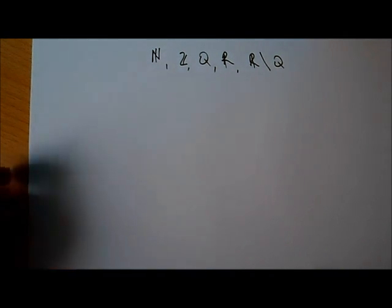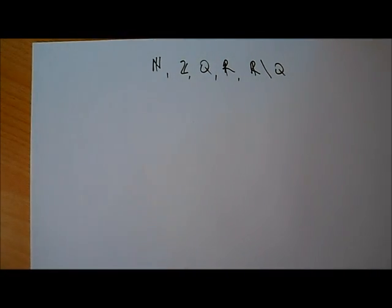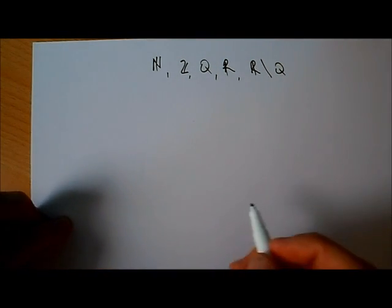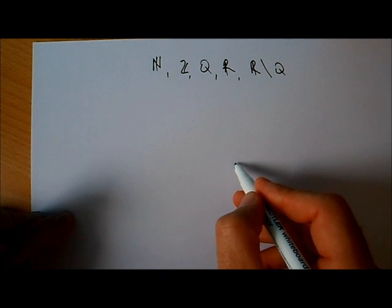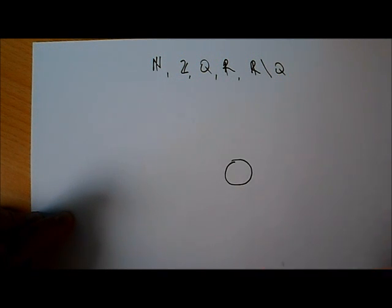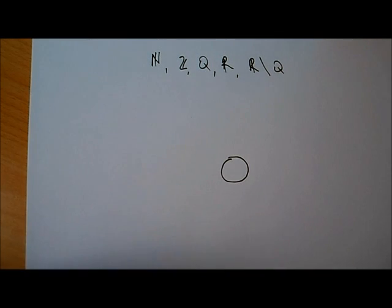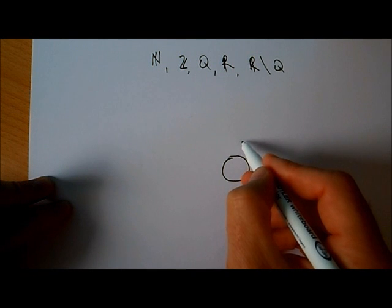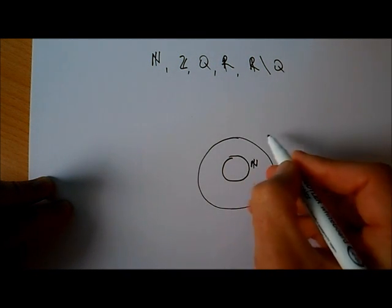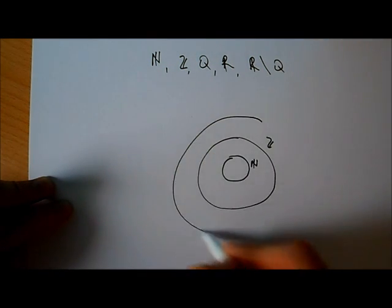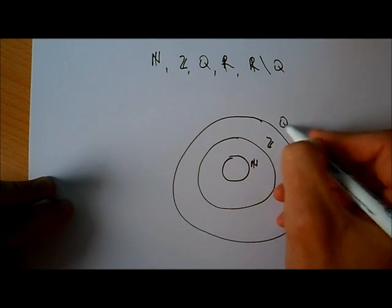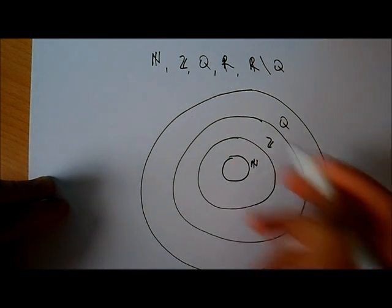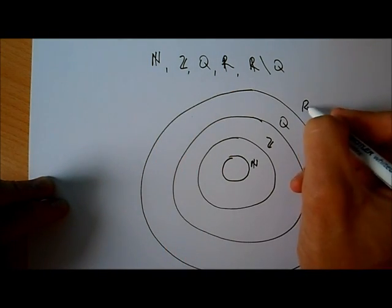We want to put them into a Venn diagram. What does this Venn diagram look like? Well, it's going to look like this. On the inside we're going to have — I'm just going to draw a few circles, that's all a Venn diagram is, it's a place where you can put something. So we have the natural numbers, then out here we've got the integers, we've got Q out here, and then we've got the real numbers out here. So here's our Venn diagram.